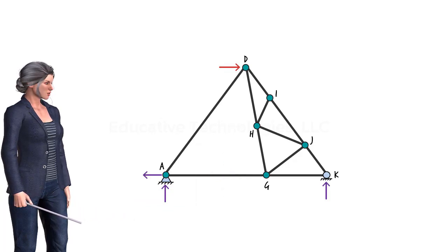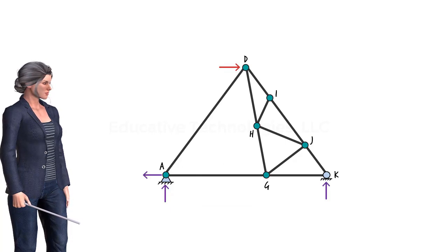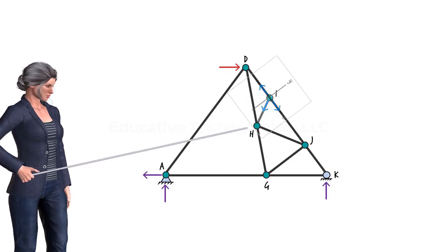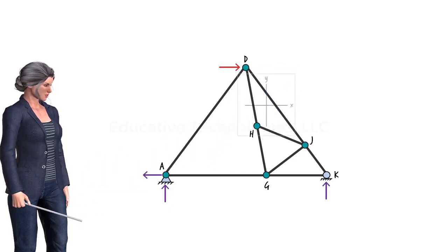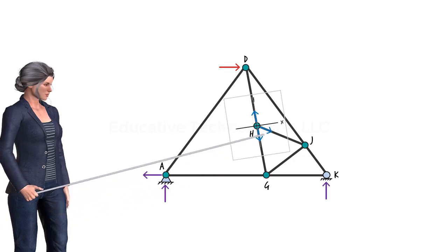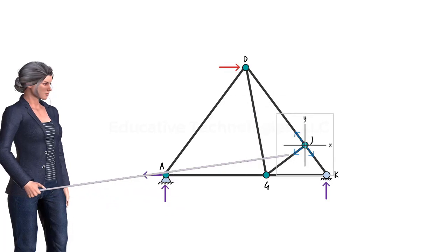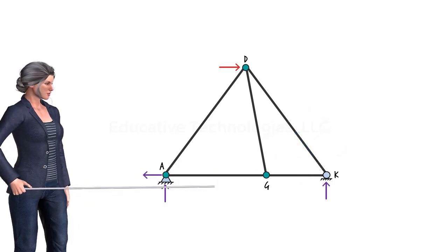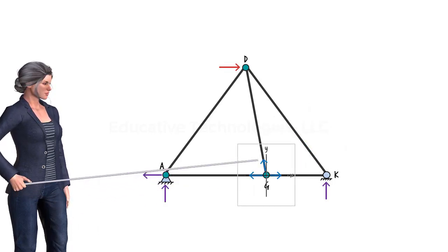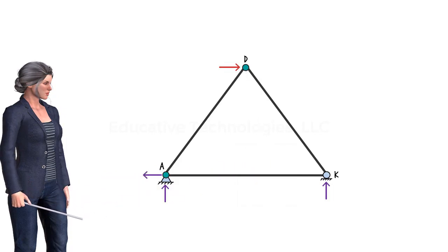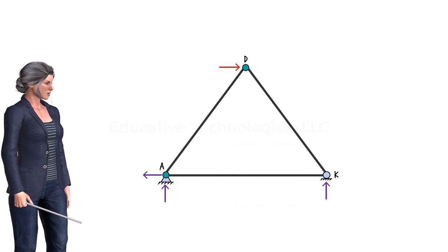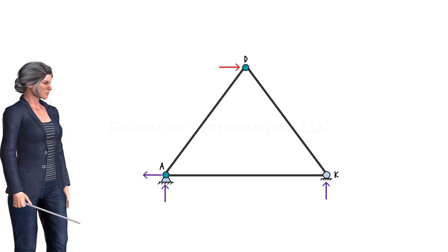The members on the right side of the truss can be examined in a similar manner. From joint I, we can conclude that HI is a zero force member. At joint H, we can show that HJ is a zero force member. Also, JG is a zero force member, and we can easily show that GD is a zero force member. No further simplifications can be made past this point. The simplified truss can be analyzed to determine the support reactions and the remaining member forces.